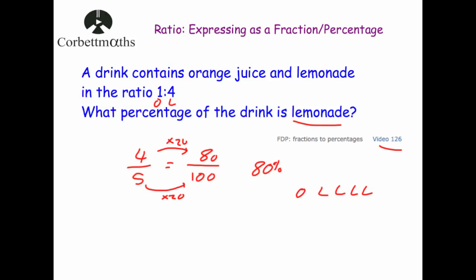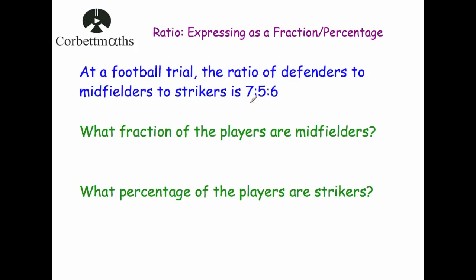Our last question: at a football trial the ratio of defenders to midfielders to strikers is seven to five to six, meaning for every seven defenders there are five midfielders and six strikers. What fraction of the players are midfielders? Adding up: seven plus five is twelve, plus six is eighteen, so eighteen altogether. Midfielders are five, so it's five eighteenths.